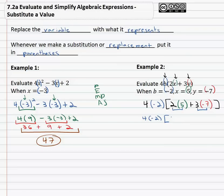Continuing inside the parentheses, the 10 plus negative 21, we have 4 times negative 2 times negative 11.